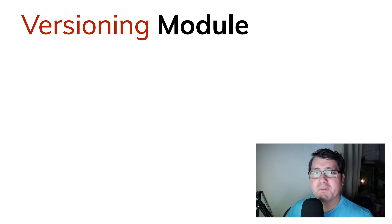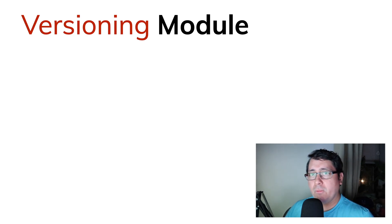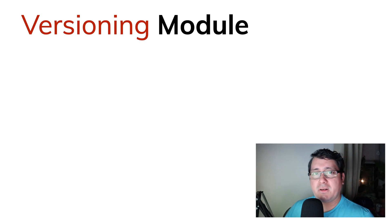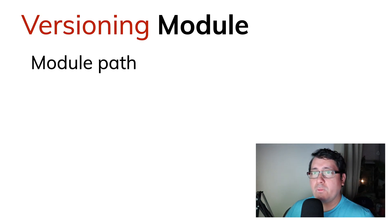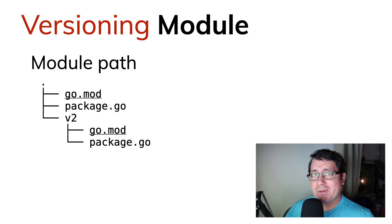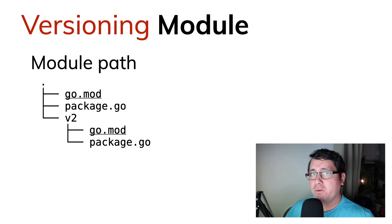How do we version a module? When you initialize your module you don't need to specify a version initially — everything starts at v0 or v1. But there are two different strategies for versioning. One is using a module path, which is literally defining a path that indicates the version the module represents. In this case you would have a v2 folder indicating this is version 2 of the package.